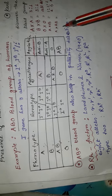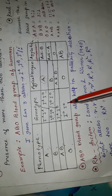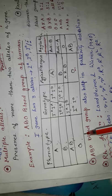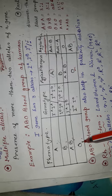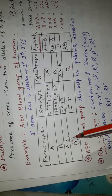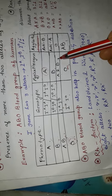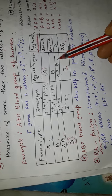Phenotype O — here the genotype is I0I0. Here, agglutinogen (that is, antigen) is absent, and agglutinin is AB. That is why O blood group is called the universal donor and AB blood group is called universal recipient. Because of this, the O blood group human does not contain any agglutinogen.